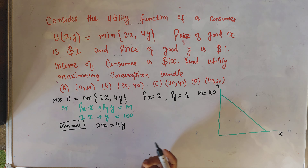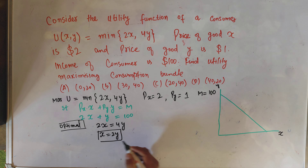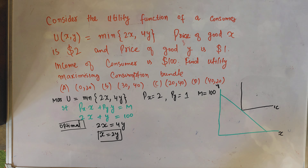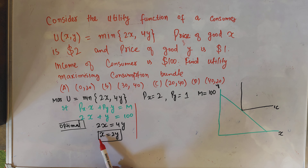We cannot use the tangency condition here because of the shape of this utility function. Let us draw the budget line with x on the horizontal axis and y on the vertical axis. The optimal solution requires that we equate the terms that are in the parenthesis with each other. So optimality requires we equate 2x with 4y. That means the optimal bundle will be at a point where 2x equals 4y, giving us x equals 2y.